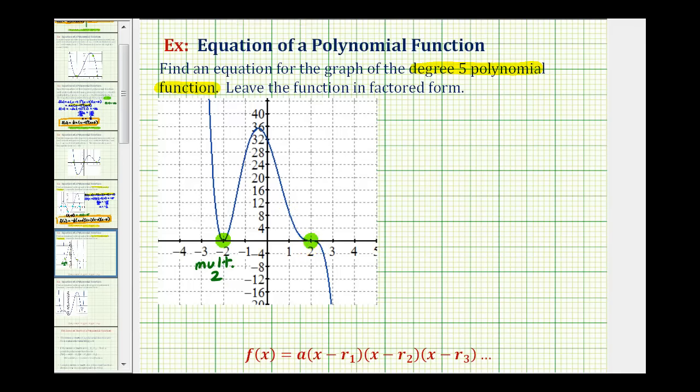Well an odd number that's greater than one, that would still meet the requirement of having a degree five polynomial, means this would have a multiplicity of three. We know it couldn't be five because then the total degree would be higher than our degree five polynomial function.